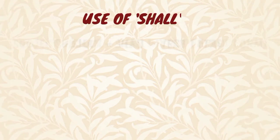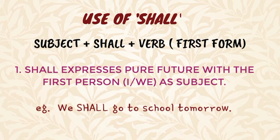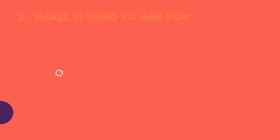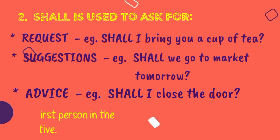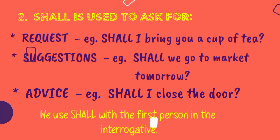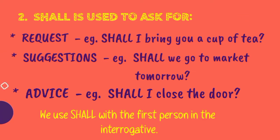Use of Shall: In a sentence, first write the subject, then shall, then the first form of verb. Shall expresses pure future with the first person as subject. For example: we shall go to school tomorrow. Shall is also used to ask for requests — shall I bring you a cup of tea? Suggestions — shall we go to market tomorrow? Advice — shall I close the door?